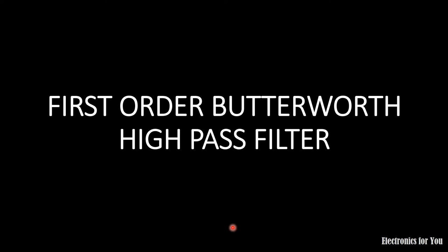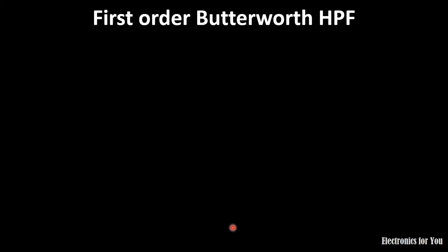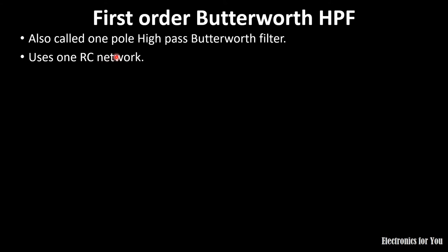Hello friends, in this video I will talk about the first-order Butterworth high-pass filter. A high-pass filter is basically a filter which will allow high-frequency components and block or attenuate the lower frequency components than the cutoff frequency. The first-order Butterworth high-pass filter is also called a one-pole high-pass Butterworth filter.